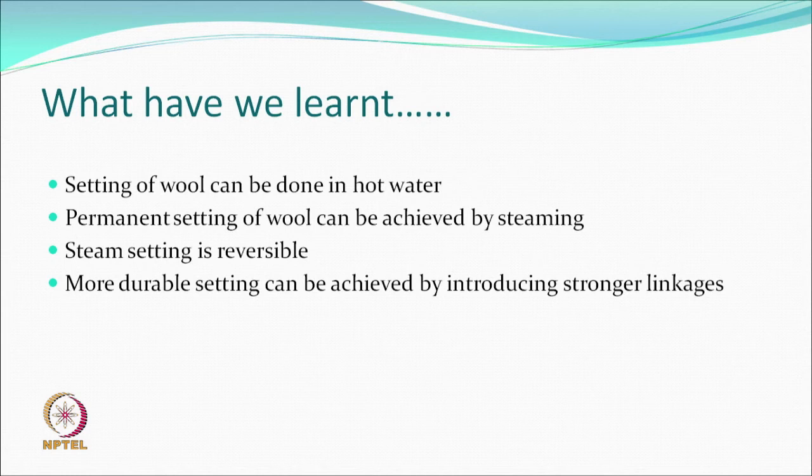So what have we learned today? We learned about the setting of wool: it can be done in hot water, which is stable to cold water washing. Permanent setting in some sense can be done by steaming, because steam temperature and energy are at a higher level, and washing can be done at a lower temperature. But steam setting is reversible. If you want to make it more durable, create new cross-links — a new type of cross-link using the disulfide linkages. Next class we take one more topic on wool, which is moth proofing of wool. See you in the next class.